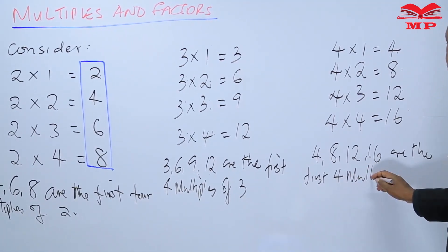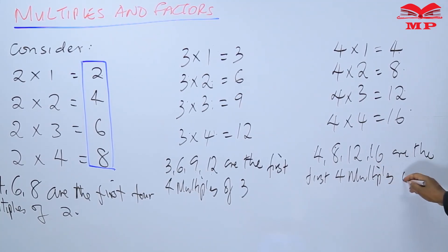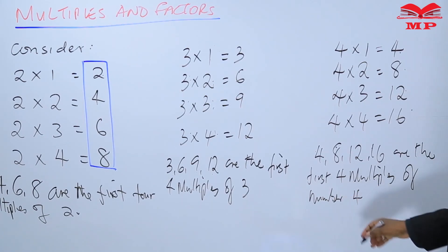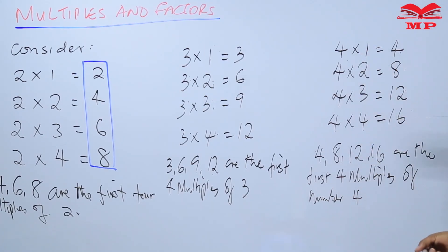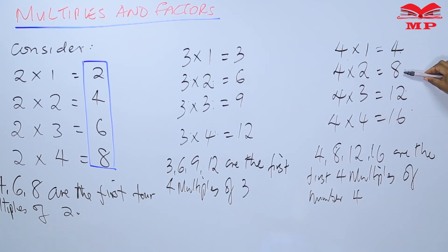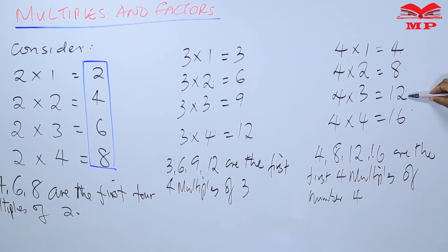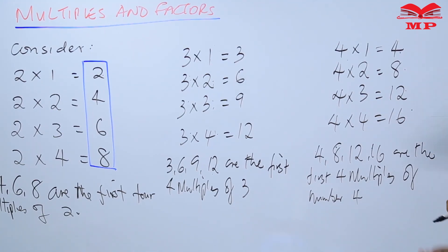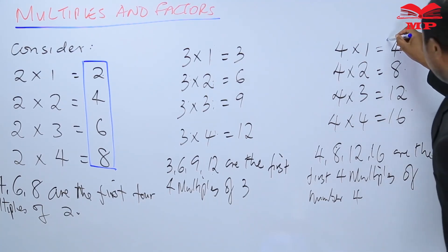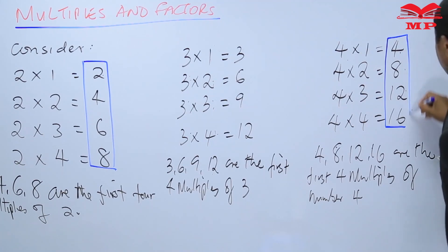The first multiple of four is four. Multiply four by two and you get the multiple eight. Then four times three gives you the multiple twelve. Four times four gives you the multiple sixteen. So these are the multiples of the number four.